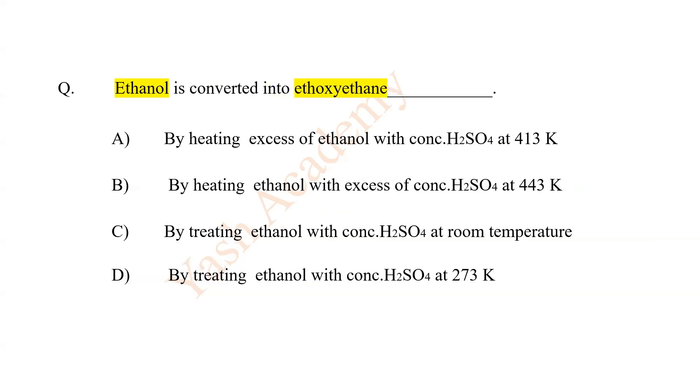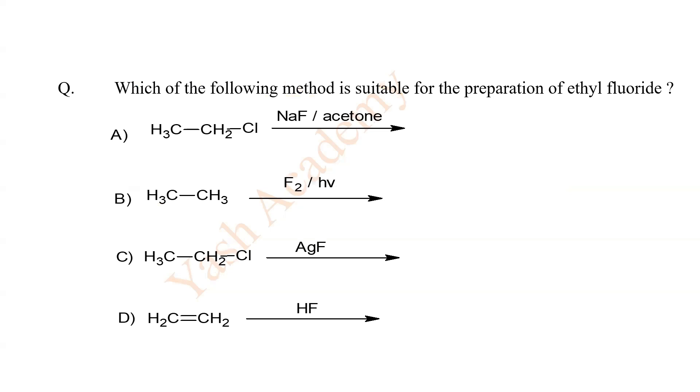Ethanol is converted into ethoxyethane. A. By heating excess of ethanol with concentrated H2SO4 at 413 Kelvin.